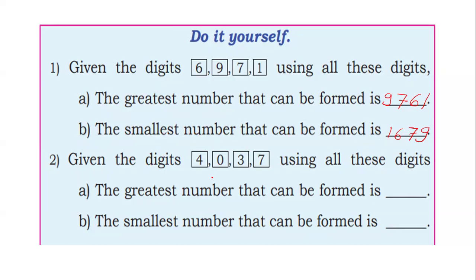Similarly, in this example the digits include 0. Given the digits 4, 0, 3, 7 — using all these digits, the greatest 4-digit number that can be formed is 7430, which is the greatest number. And the smallest number is 3047, which is the smallest number.